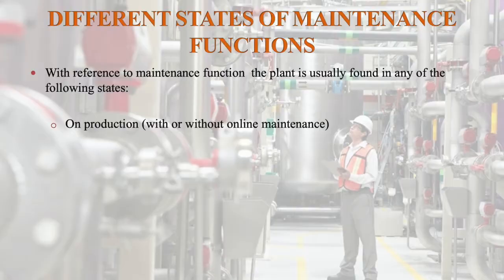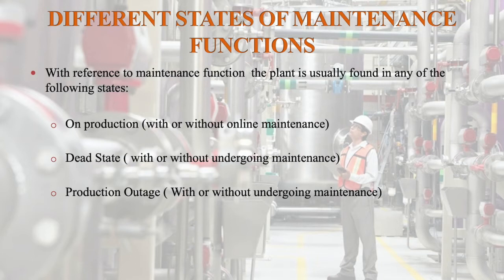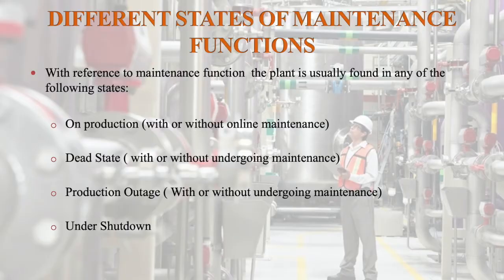The next state is dead state. Some machines, with some problem, will be kept idle — with or without undergoing any maintenance. That is known as a dead state. Then production outage — with or without undergoing maintenance. Some machines are in a production outage state. Then some machines are under shutdown, because of major problems or because major parts need to be replaced, so those machines will be shut down.